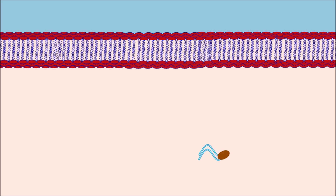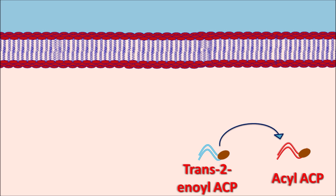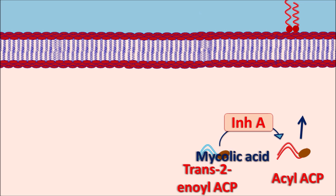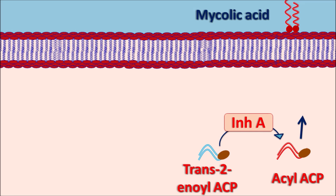Within the mycobacterial cells, one of the important steps in cell wall synthesis is the synthesis of mycolic acid. An important step is the conversion of trans-2-enoyl ACP — where ACP is the acyl carrier protein — into acyl-ACP. This step is mediated by the enzyme InhA, which is coded by the gene INHA. The resulting acyl-ACP undergoes further steps to release the mycolic acid molecule, which is then transported outside the membrane to form the cell wall of mycobacteria, providing cell wall rigidity.